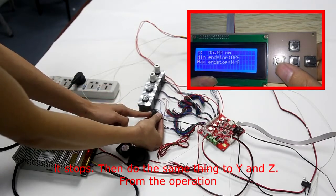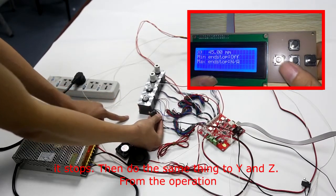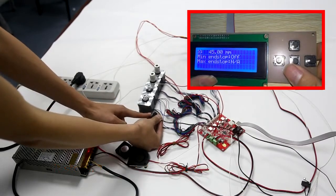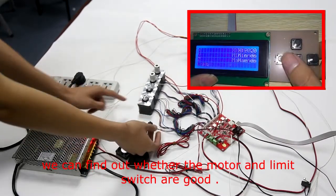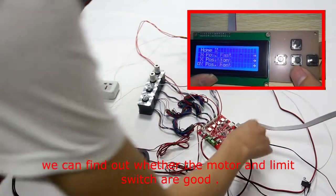Then do the same thing to Y and Z. From the operation, we can find out whether the motors and limit switches are good.